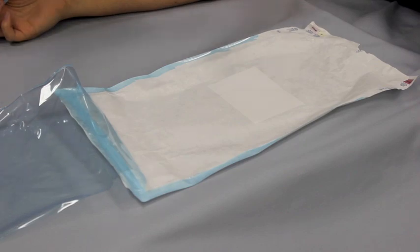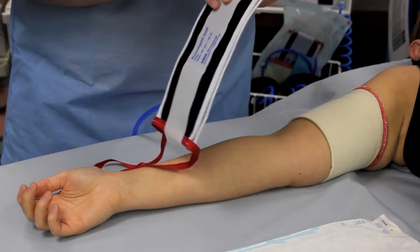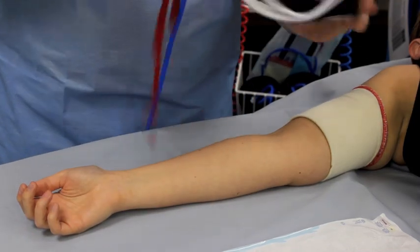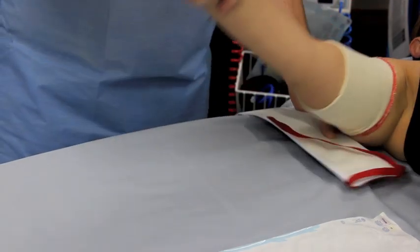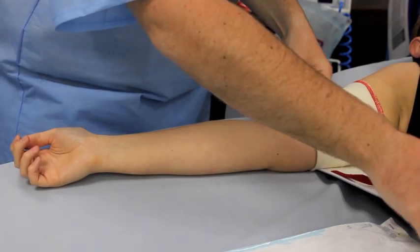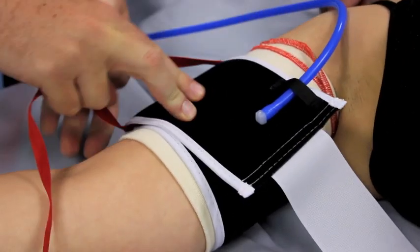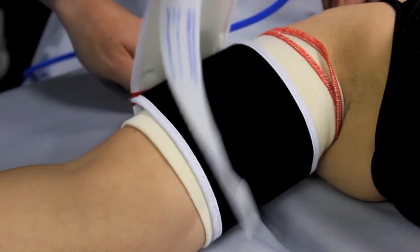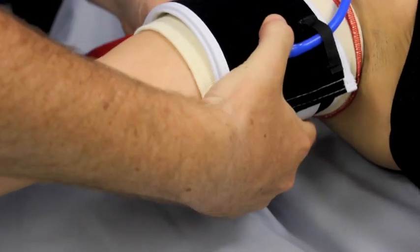By selecting the correct tourniquet size, application of the cuff is much easier. Too long a cuff creates excessive overlap, causing a loose fitting cuff and insufficient occlusion. The bladder must overlap but not exceed one quarter to one third of the overall cuff length. By using the colour coded ties, the tourniquet cuff can be tightened sufficiently reducing movement of the cuff during inflation.